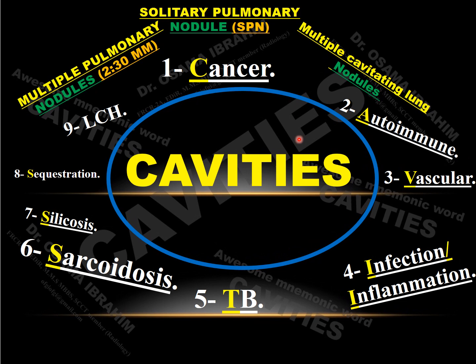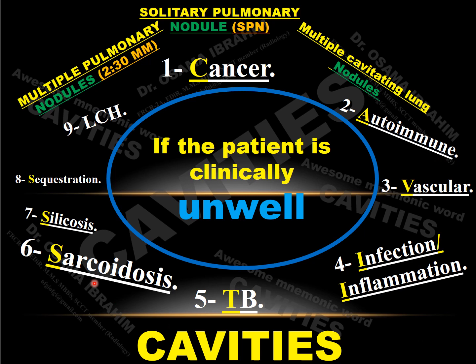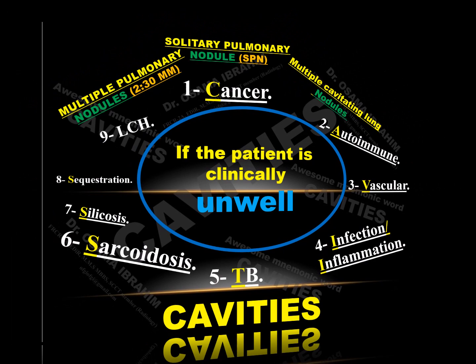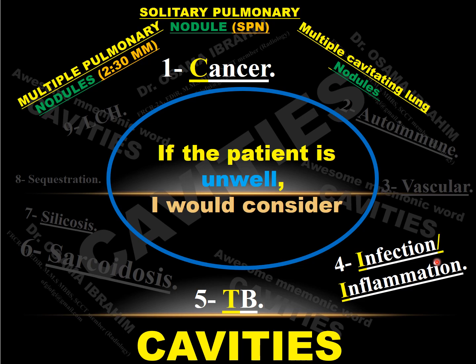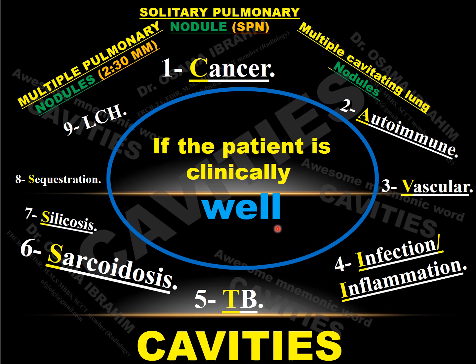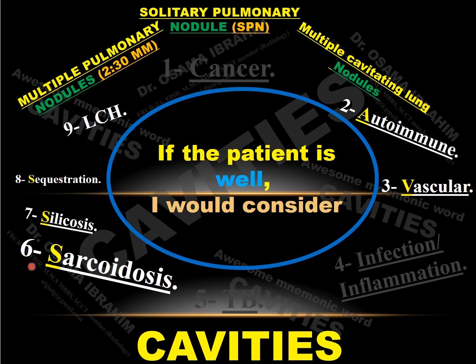Now, how can we select one from this differential diagnosis as the cause of the presented case? First, I should classify the patient according to their clinical presentation. If the clinical presentation is unwell, I can choose from the list: cancer, TB, or abscess — examples of infections. If the patient is presenting well, I can look at another list of remaining differential diagnoses and narrow them down.